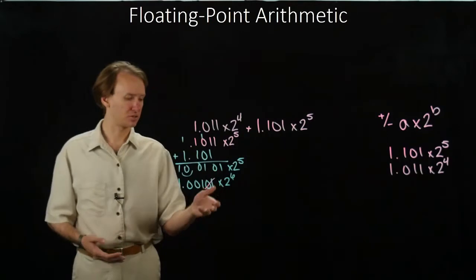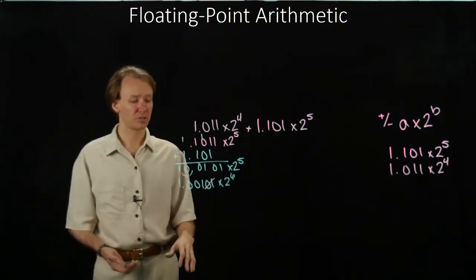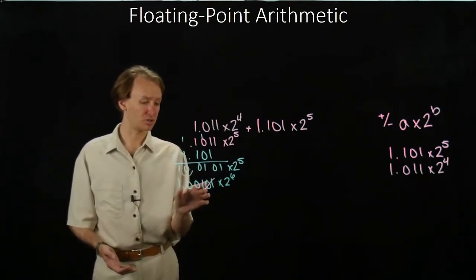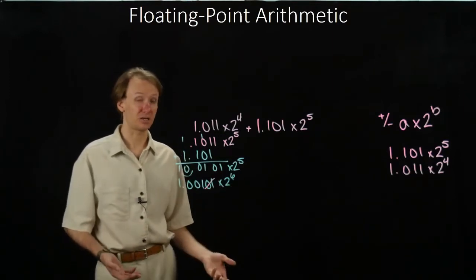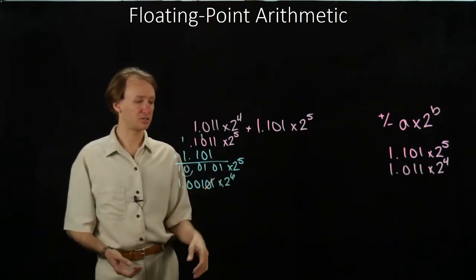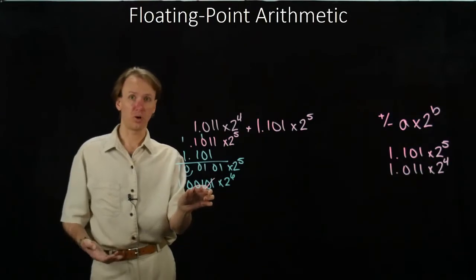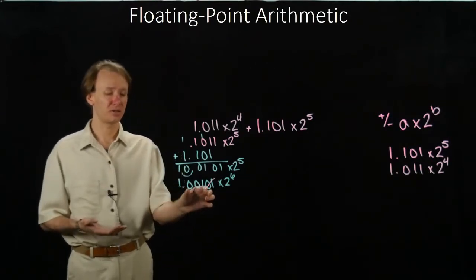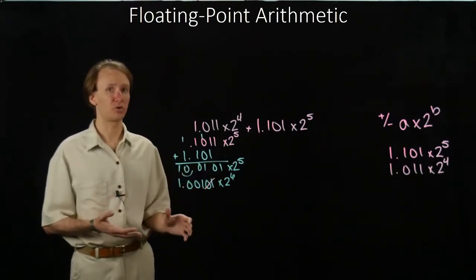Which means that I would round those two bits off. In this case, they're below one half, so they'll get dropped. And I'd be left with 1.001 times 2 to the sixth. I'd stick six in as my exponent, 001 as the significand. That would be the result of my floating point computation.